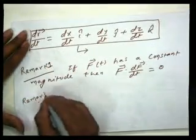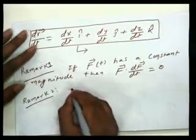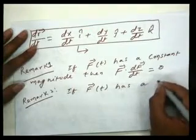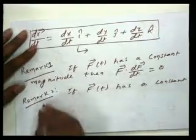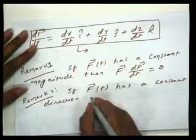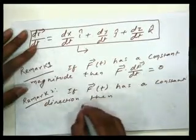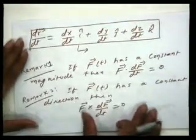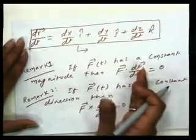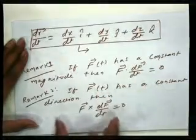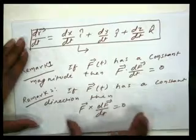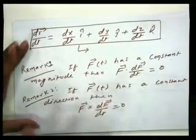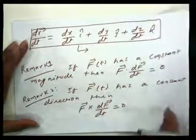Remark 2 is another important result in this chapter: if a vector A(t) has a constant direction, then the cross product of that vector and its derivative is zero. So to summarize: constant magnitude gives dot product zero, and constant direction gives cross product zero. These are two key results to always keep in mind.